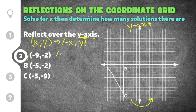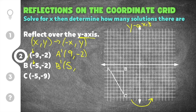For A prime, we change the sign on the x: because x is negative 9, it becomes positive 9, but the y value remains the same at negative 2. For B prime, x is negative 5, so it becomes positive 5, and the y stays negative 2. For C prime, x is negative 5 so it becomes positive 5, and the y stays the same at negative 9.